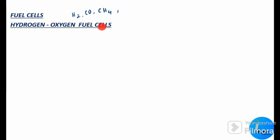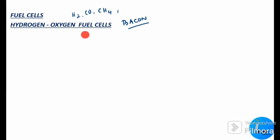This hydrogen-oxygen fuel cell is otherwise called the Bacon cell — B-A-C-O-N — since it was designed by the scientist Bacon in the year 1959. It is a potential source of electrical energy because it was used as a primary source of electrical energy in the Apollo space program.